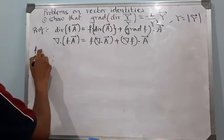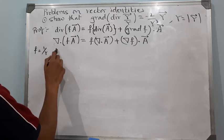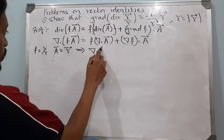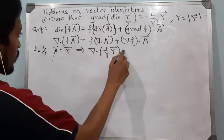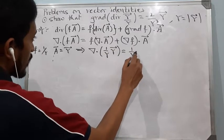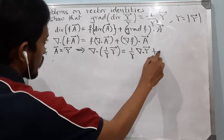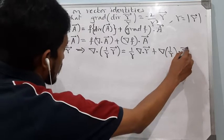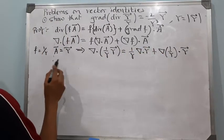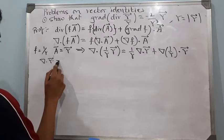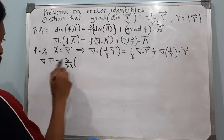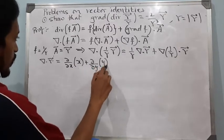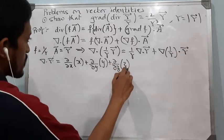So f is 1/r and vector A is vector r. Therefore, divergence of (1/r · r) equals 1/r times divergence of r, plus gradient of 1/r dot vector r. Now, divergence of r is ∂/∂x of x plus ∂/∂y of y plus ∂/∂z of z, which equals 3.